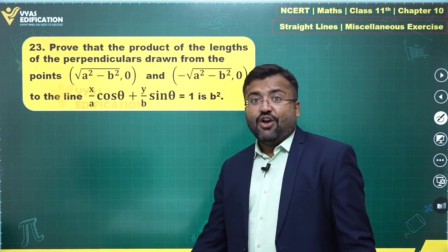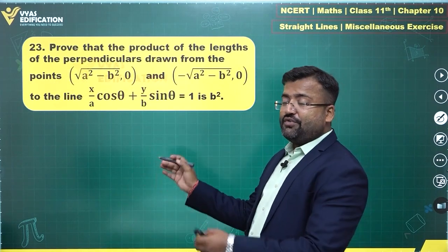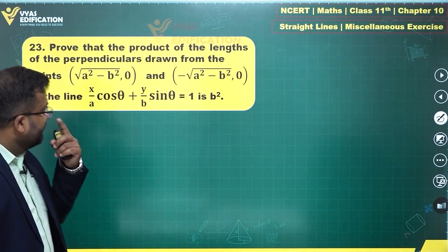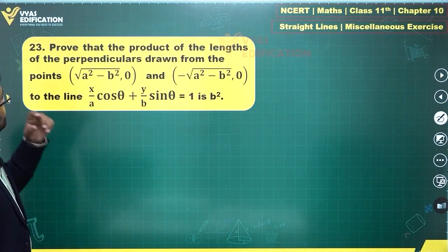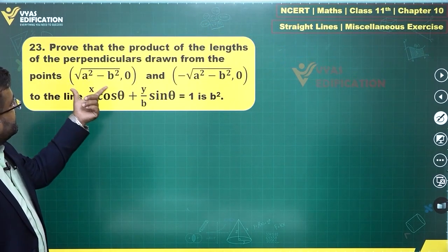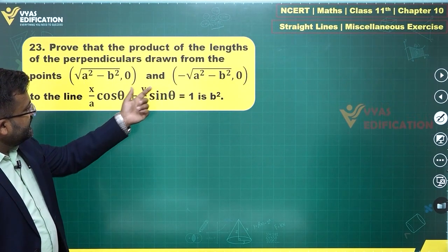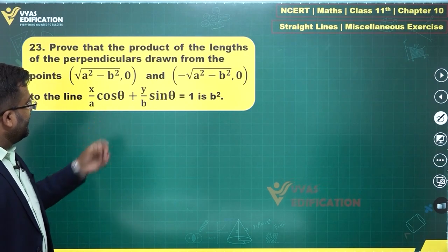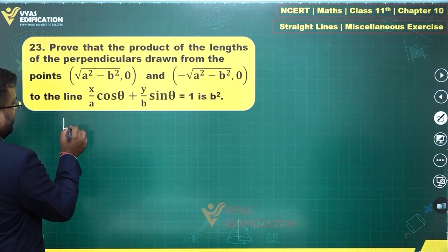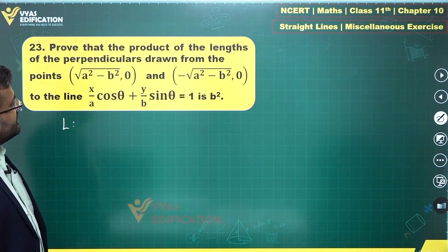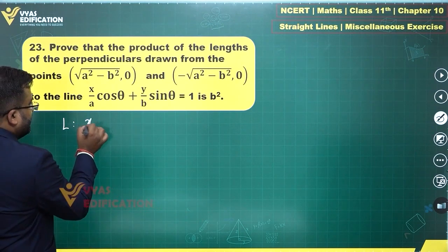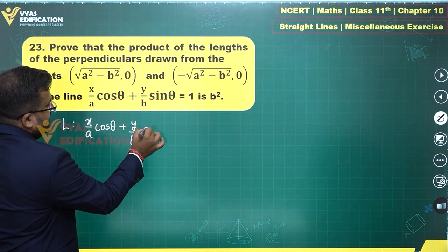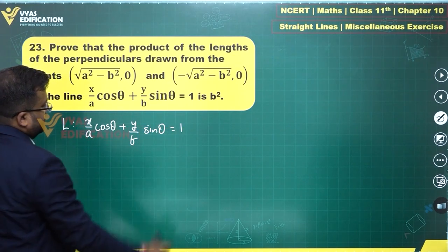For this particular question from the point of view of straight lines, let's work through it. We are interested in the product of the lengths of perpendiculars from the two given points to the line. The line is x/a·cosθ + y/b·sinθ = 1. To simplify, we take the LCM of the denominators, which gives us: b·x·cosθ + a·y·sinθ = ab.